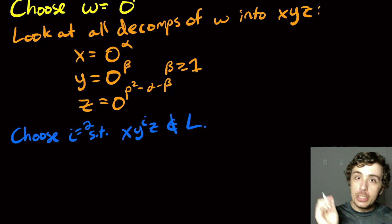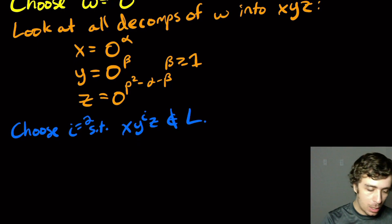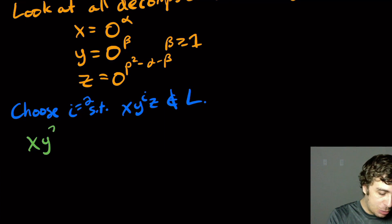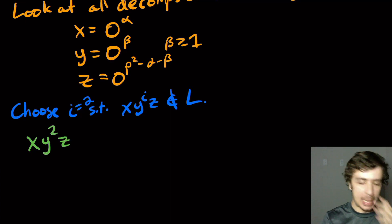Okay, it turns out i equal three also works, but i equals two is the one that is usually done, and the one I'm going to do here. Okay, so what is this string? X, y squared, z, and we want to show that it's not in the language.